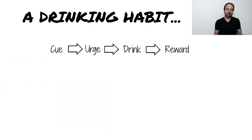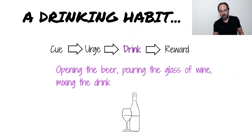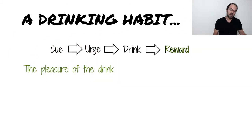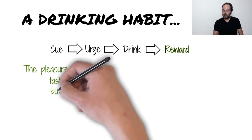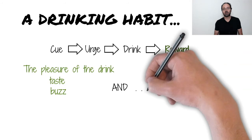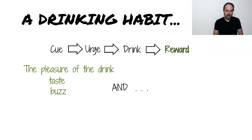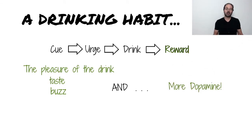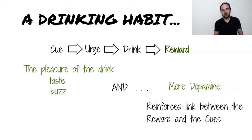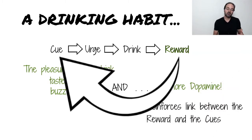Normally what happens is when you have an urge, you obey it, and you drink. This gives your brain the reward that it was seeking, which is both the pleasure associated with the drink — the taste and the buzz. But in addition to that, there's another aspect of the reward. Your brain thinks alcohol is important to your survival, and so when you get some, it gives you another shot of dopamine, and in this context it reinforces the association between the reward and the cues. The result is that the next time you experience the cues, the urge is stronger.